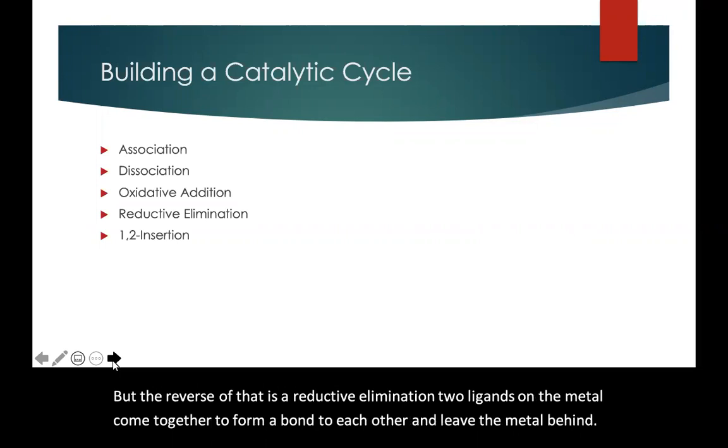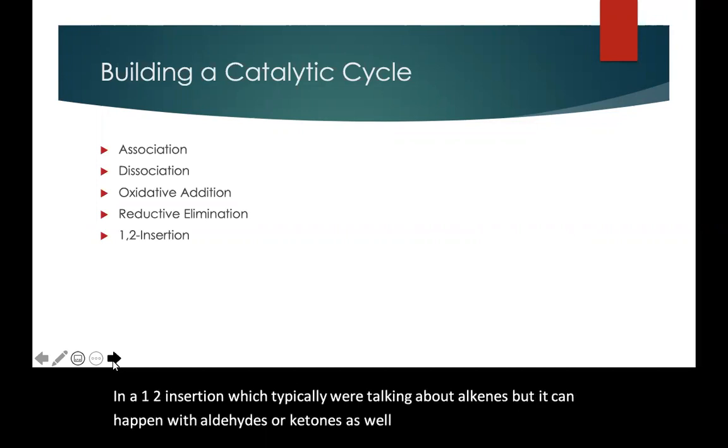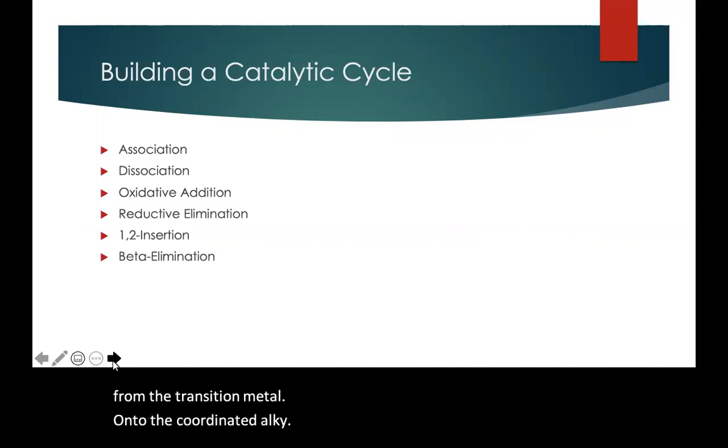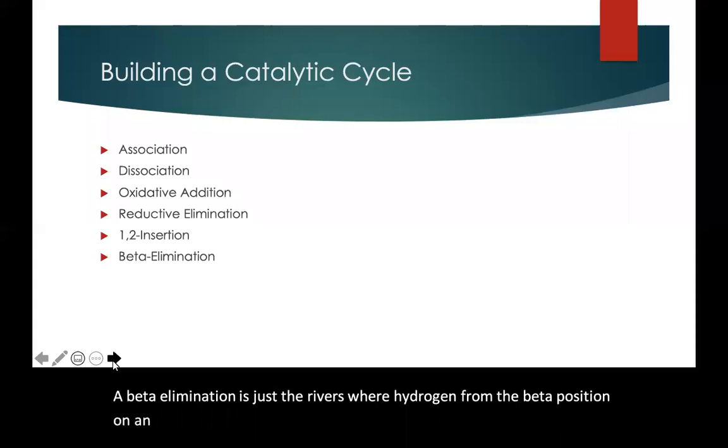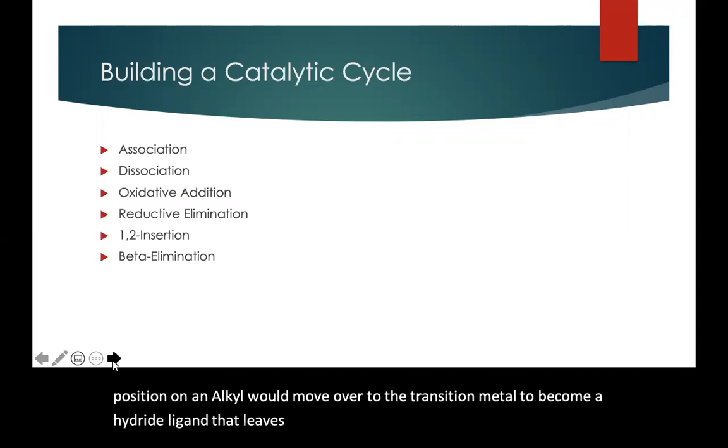In a 1,2 insertion, typically we're talking about alkenes, but it can happen with aldehydes or ketones as well. A group, typically a hydride, moves from the transition metal onto the coordinated alkene. Beta elimination is just the reverse where a hydrogen from the beta position on an alkyl would move over to the transition metal to become a hydride ligand, and that leaves also a coordinated alkene on the metal.